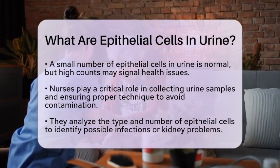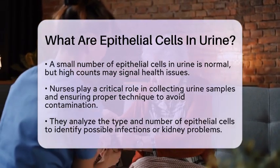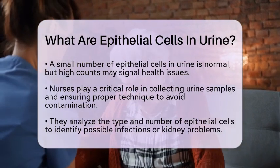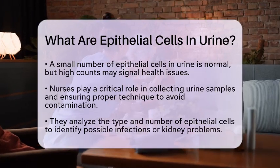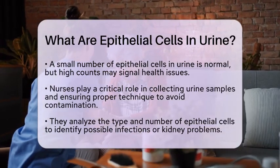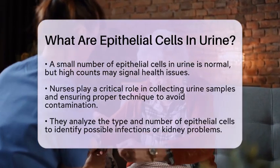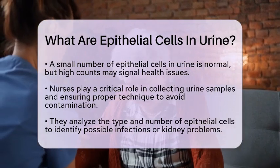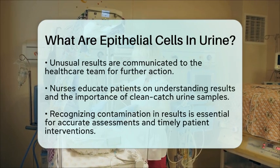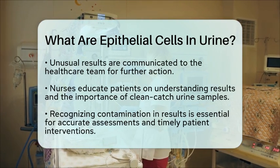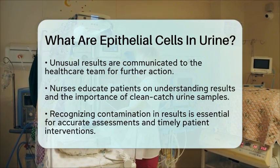In nursing practice, understanding epithelial cells in urine is essential for interpreting urinalysis results. Nurses are often the ones who collect urine samples, and they need to ensure proper technique to minimize contamination. When reviewing results, nurses look closely at the type and number of epithelial cells to help identify possible infections or kidney issues. If unusual results are found, nurses communicate these findings to the healthcare team and educate patients about what the results mean and what steps to take next.